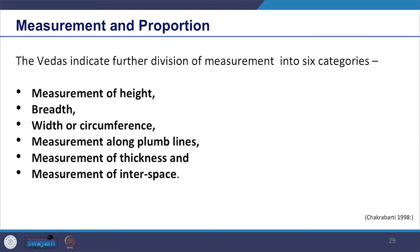The period also shows strong understanding of aesthetics at the building level as well as planning level. We see considerable understanding was developed of various factors such as orientation, topography, built form and aesthetics in this period. We also see understanding of measurement and proportion in the built form called mana to attain harmony in the built environment. The Vedas indicate further division of measurement into six categories: measurement of height, breadth, width or circumference, measurement along plumb lines, measurement of thickness and measurement of interspaces. We also see the elements of architecture and urban design being employed in the townscape.